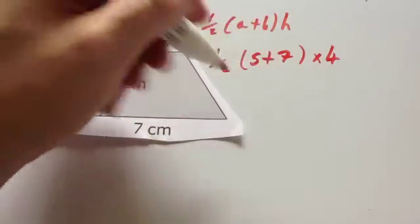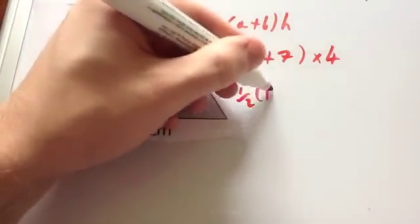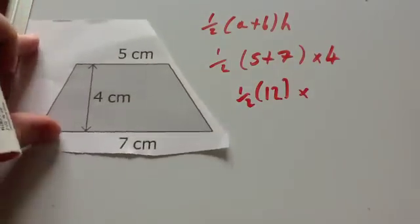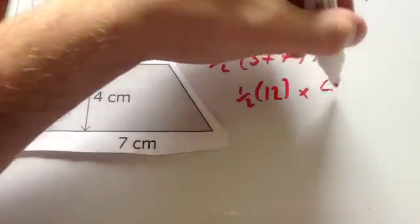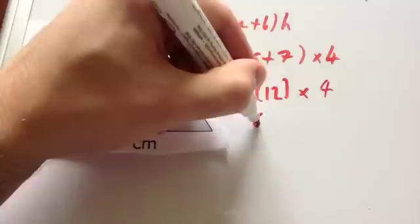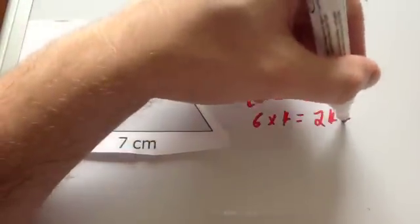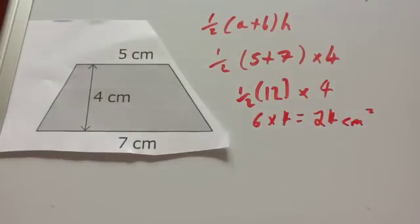So 5 plus 7 is 12, so it's a half of 12, and then times by the height. So the height in this case is 4. Half of 12 is 6, and then times by 4 equals 24. So the area of the trapezium is 24 centimeters squared.